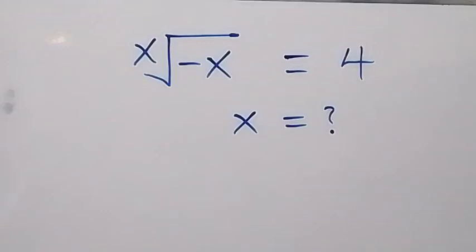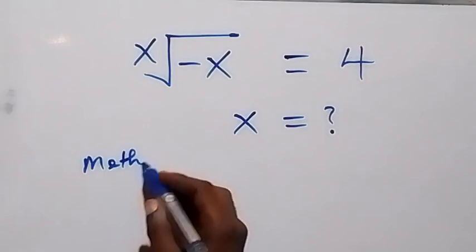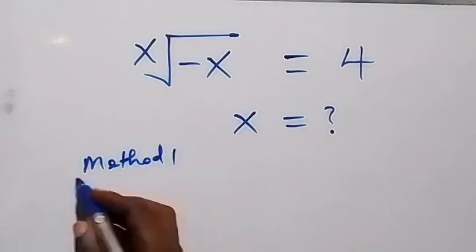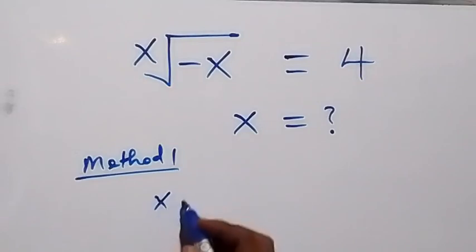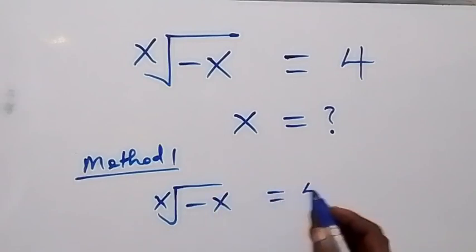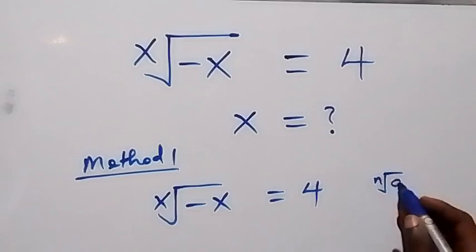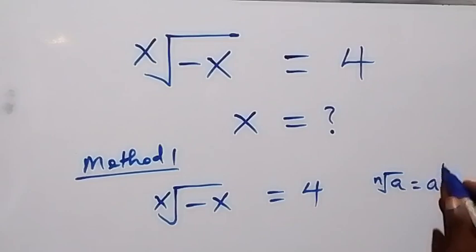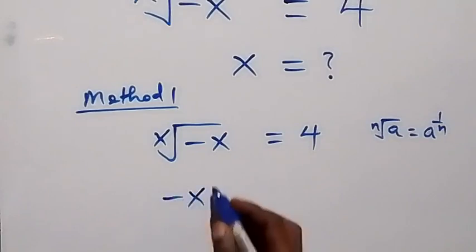Hello, you're welcome. We're going to solve for x in this problem using two methods. The first method makes use of the Lambert W function. We have x root of minus x equals 4. Recall that the n-th root of a is the same thing as a raised to the power one over n.